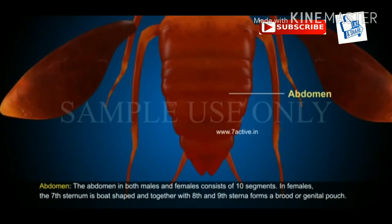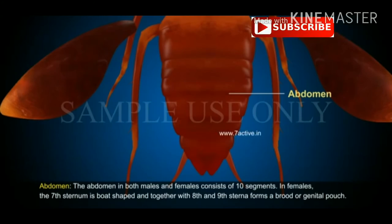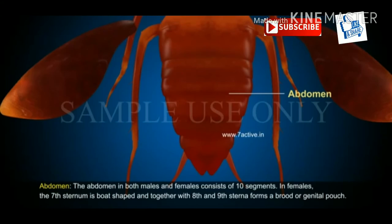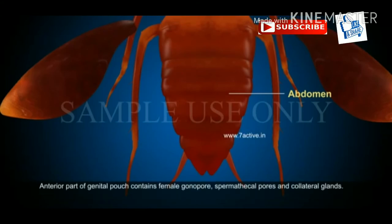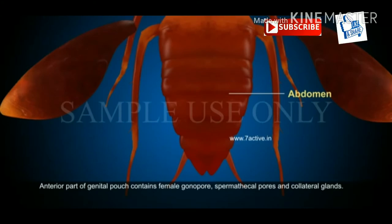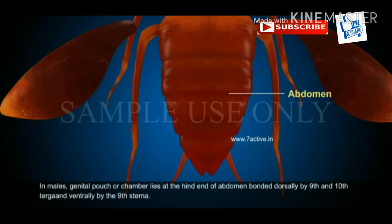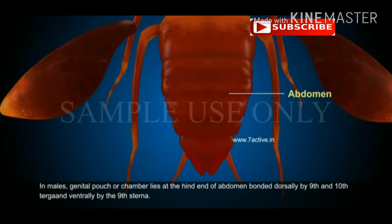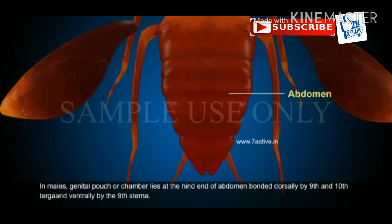In females, the seventh sternum is boat-shaped and together with the eighth and ninth sternites forms a brood or genital pouch. The anterior part of the genital pouch contains the female gonopore, spermathecal pores, and collateral glands.